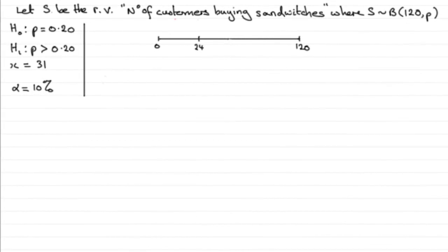Now in the previous video I showed you how we could solve this particular problem by looking at the property of X being greater than or equal to 31, and if it was less than 10% we would reject H₀. But now I'm going to show you how we can do it by a critical value method.